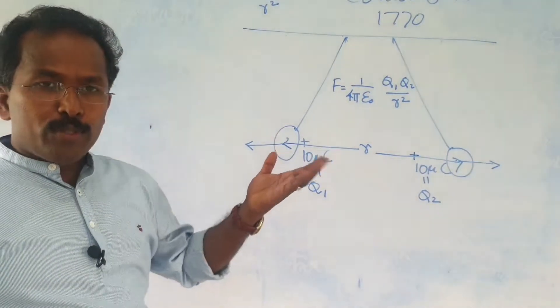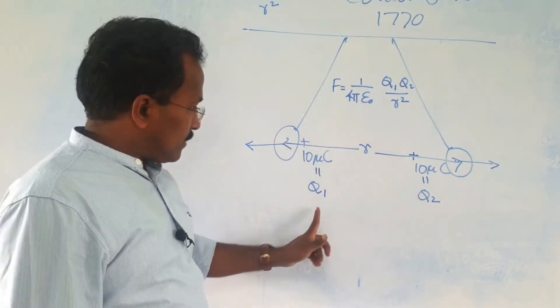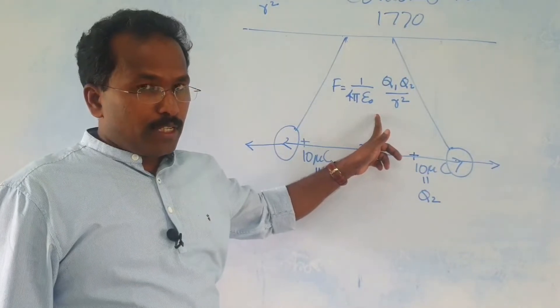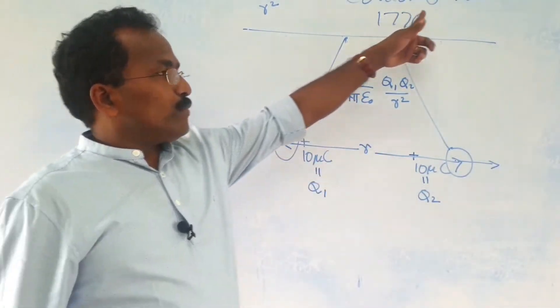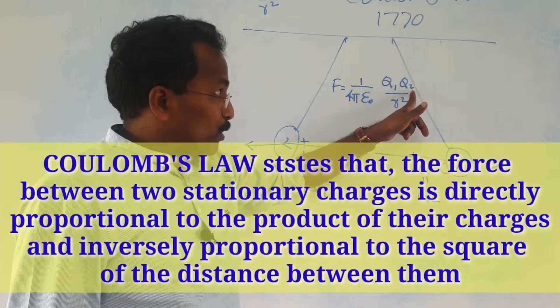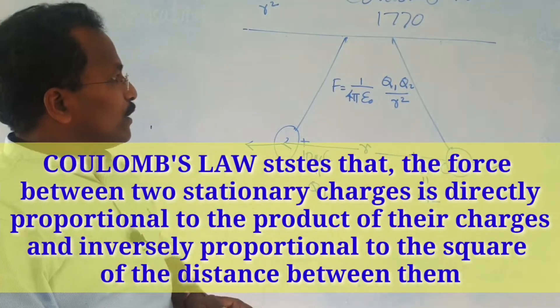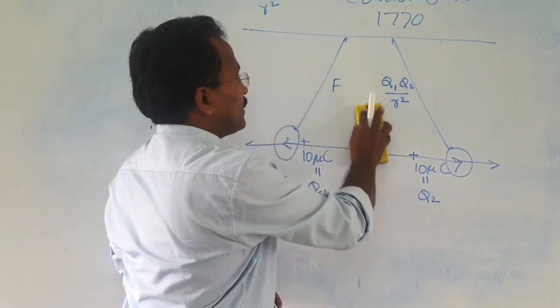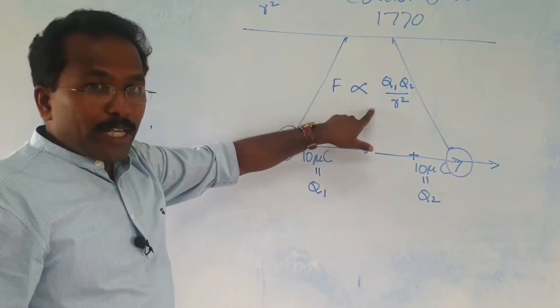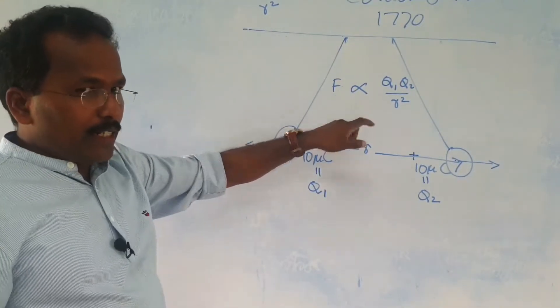Now, how to put Coulomb's law into a definition form or a law, how can you state that? The force between two charges, remember these charges must be stationary for this equation to be correct. Coulomb's law states that the force between two stationary charges is directly proportional to the product of their charges and inversely proportional to the square of the distance between them. You can probably as the first step write this as f proportional to like this. This law can be stated in a similar fashion as you state Newton's law. You have to memorize that.